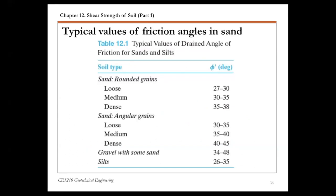This table summarizes typical values of friction angles for various types of sand. Depending on density and angularity of the grains, the effective friction angle in sand ranges from 27 degrees up to 45 degrees for dense angular sands. For gravel with some sand, the friction angle ranges from 34 to 48 degrees; in organic silts, 26 to 35 degrees. This gives you a sense of the proper range of friction angles in sand.